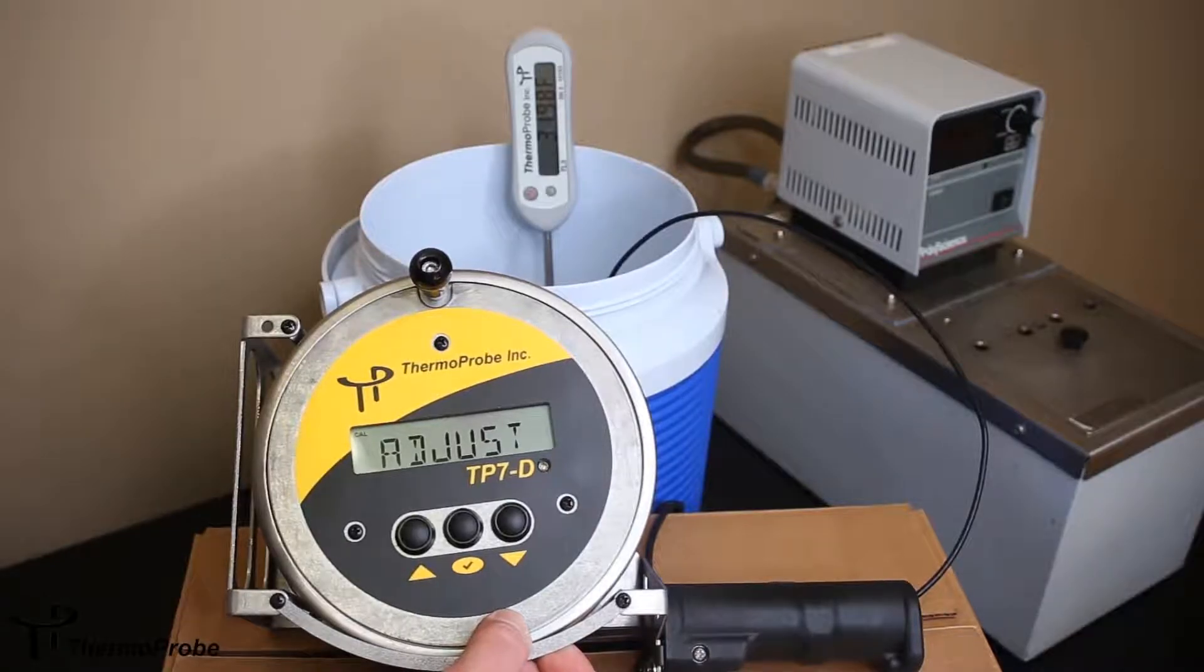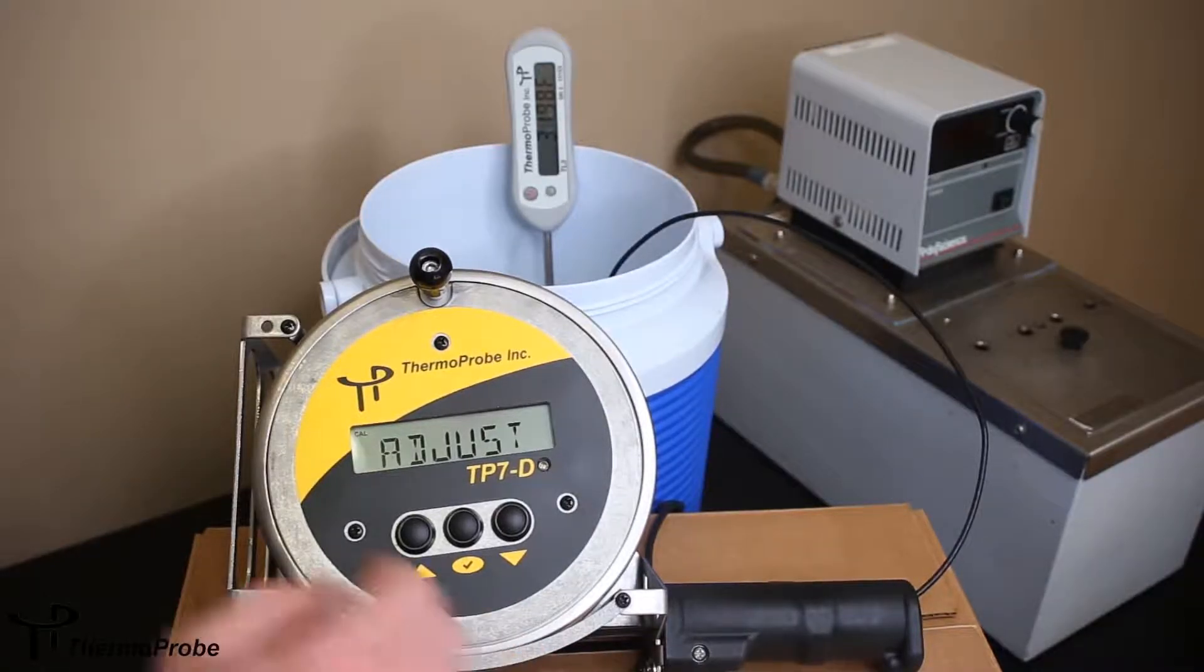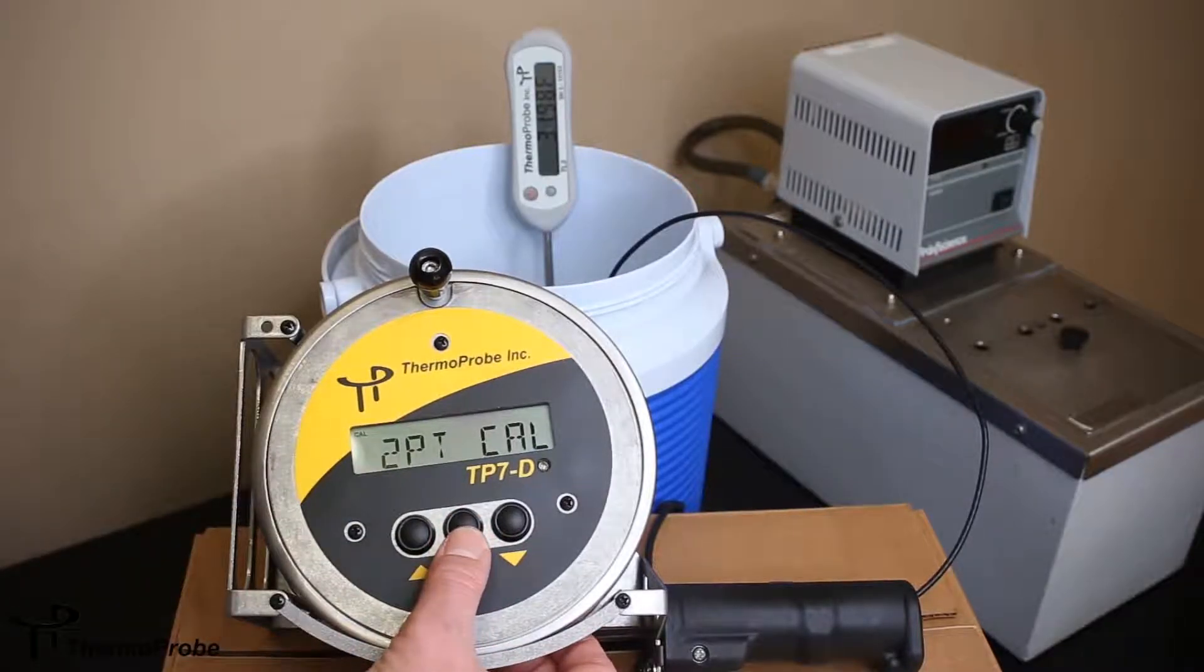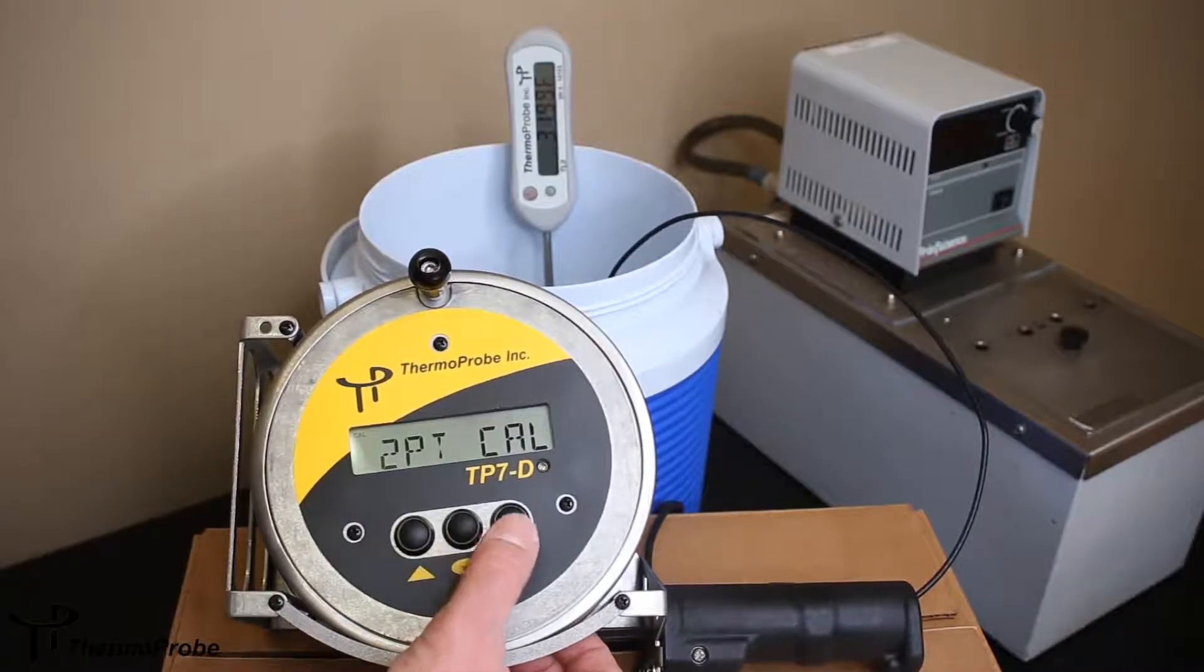Now I can decide if I want to make an adjustment, which I do. I also can see that I have a calibration icon. You can do a two-point, a three-point, or a four-point calibration. We're going to be doing a two-point.